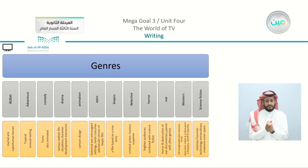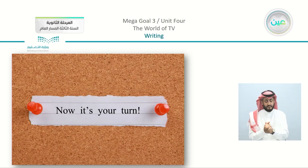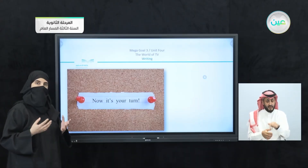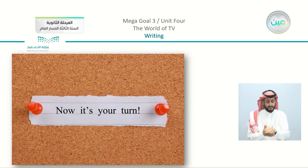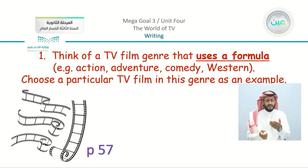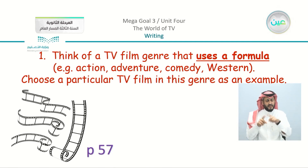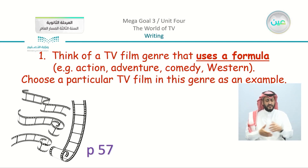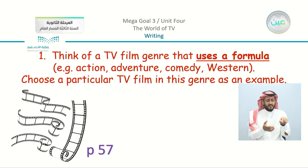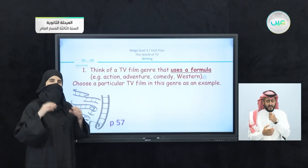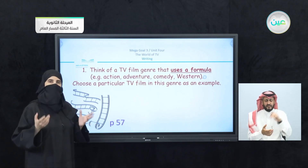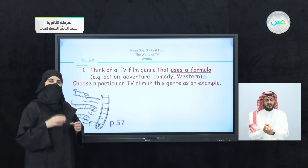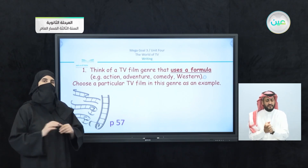Now this is our revision. We are going to move on — it's your turn. We are going to write our essay now. Starting with something very simple: number one, think of a TV film genre that uses a formula — for example, action, adventure, comedy, western. Then choose a particular TV film in this genre as an example. You are first going to think of your favorite movie and classify the genre. This is going to be the first step.